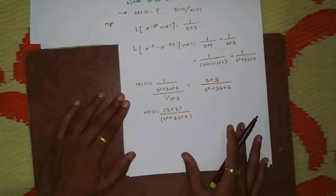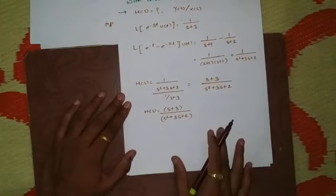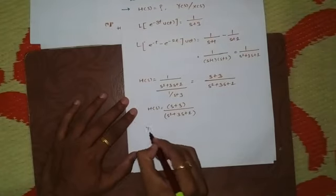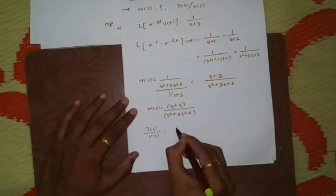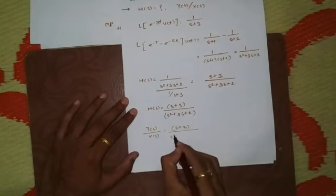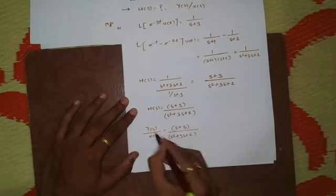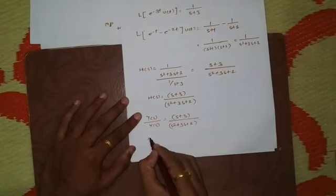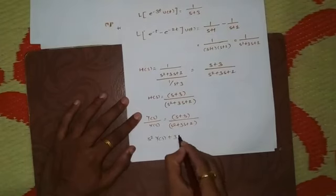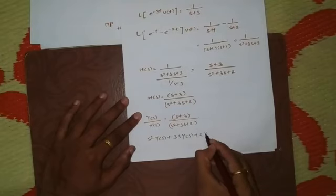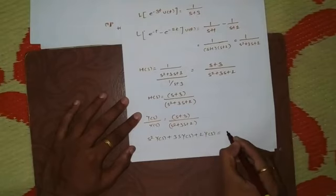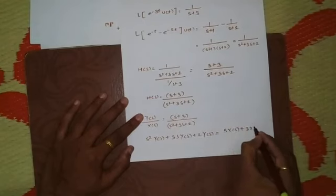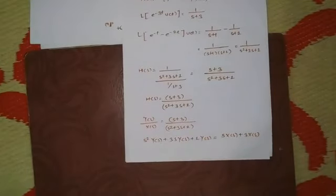Now we obtain this in terms of a differential equation. Replacing H(s) with Y(s)/X(s): Y(s)/X(s) = (s+3)/(s² + 3s + 2). Cross-multiplying: s²·Y(s) + 3s·Y(s) + 2·Y(s) = s·X(s) + 3·X(s).